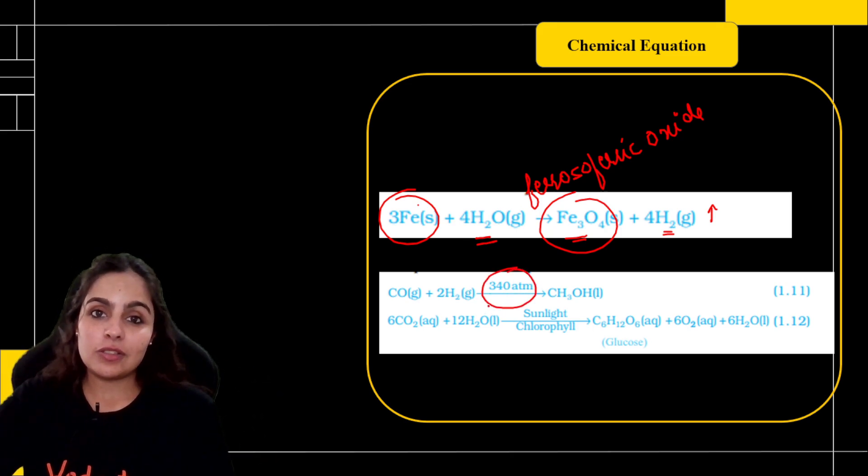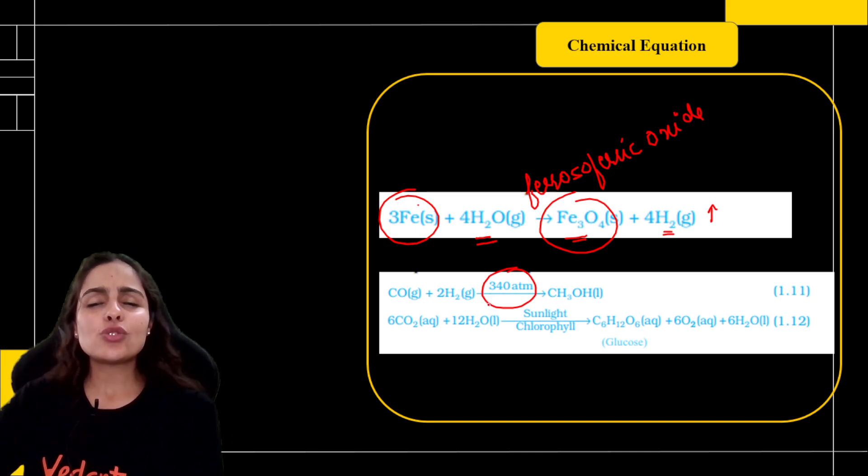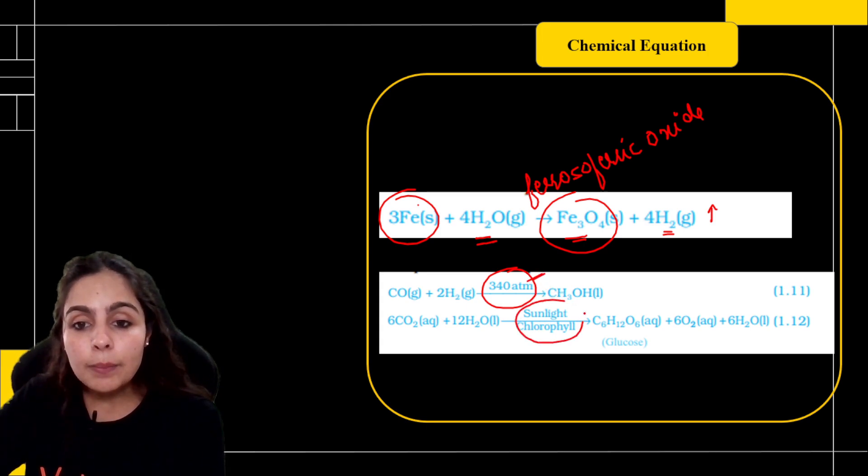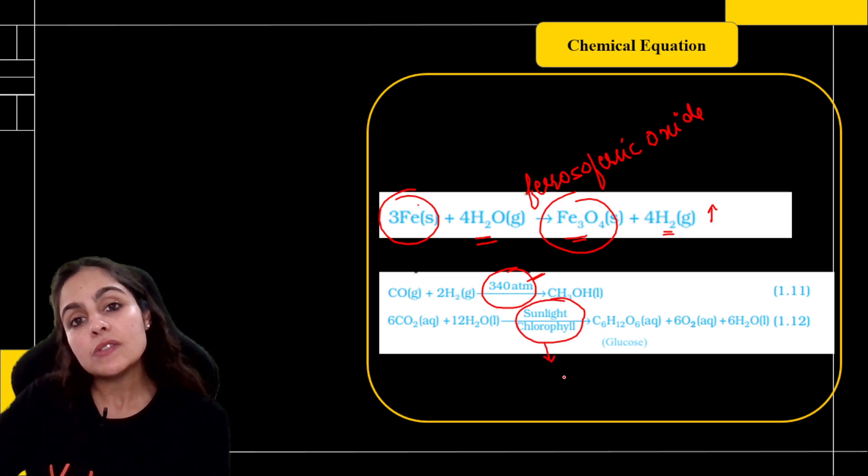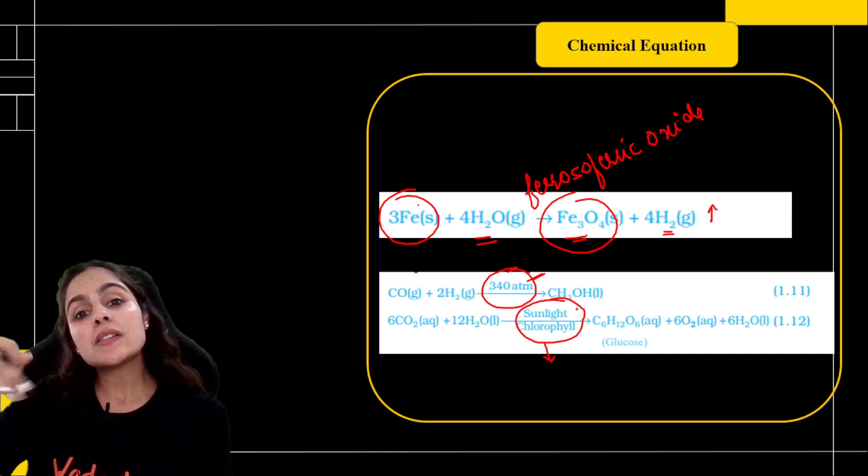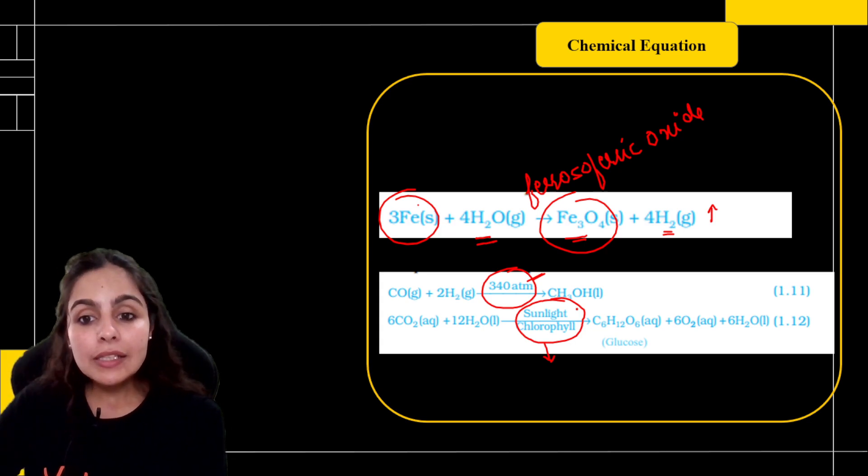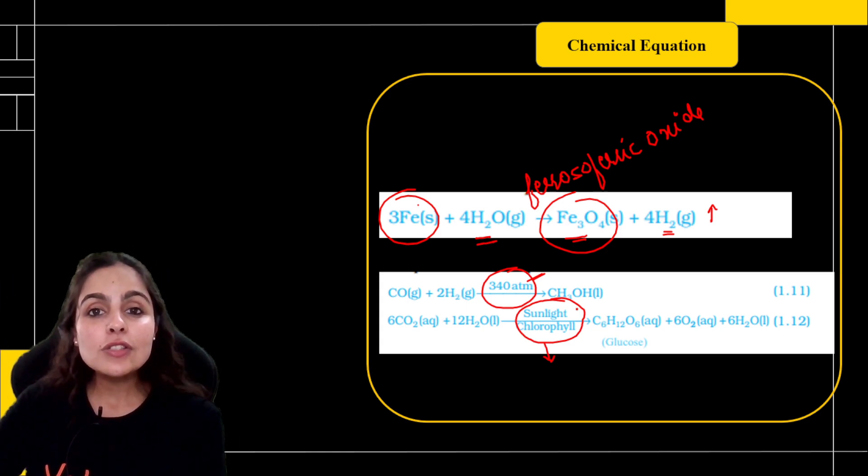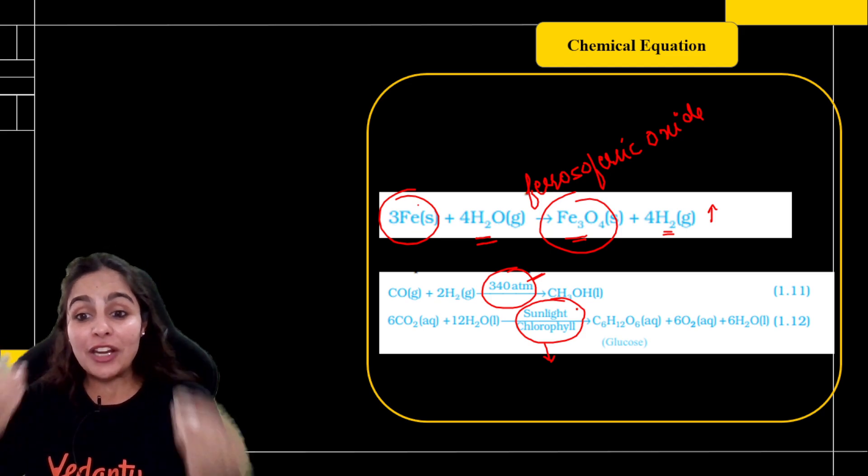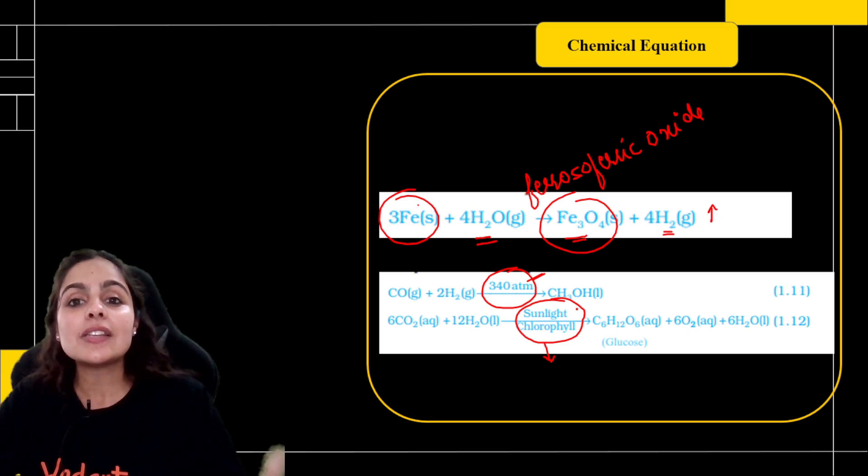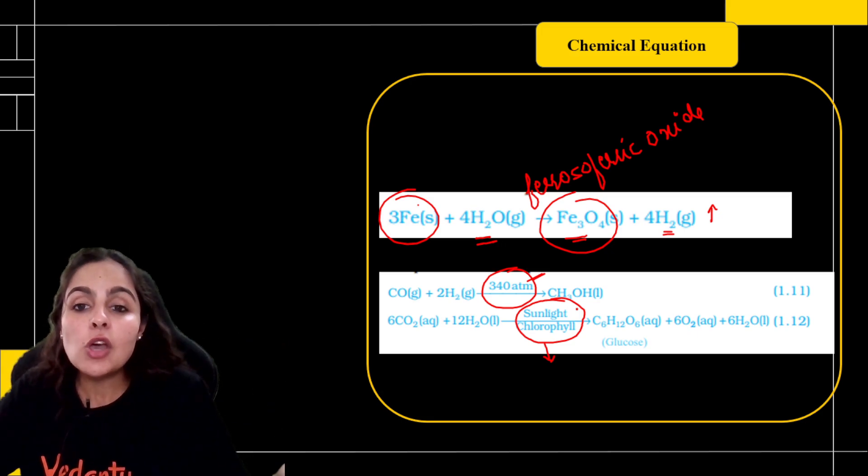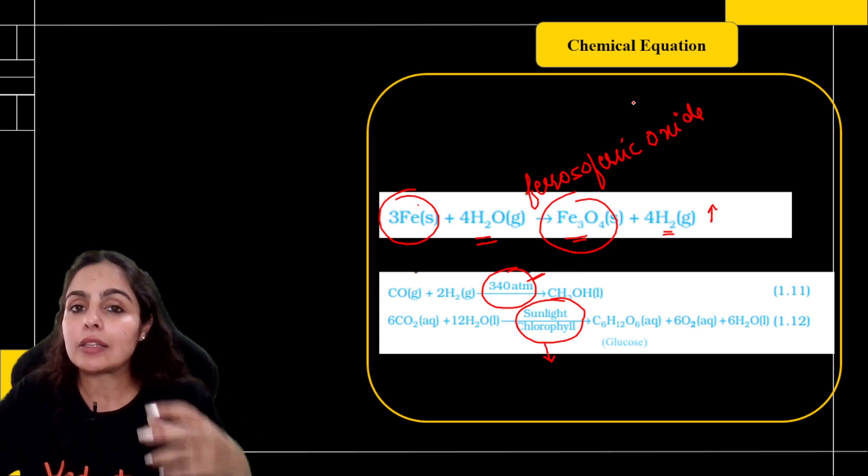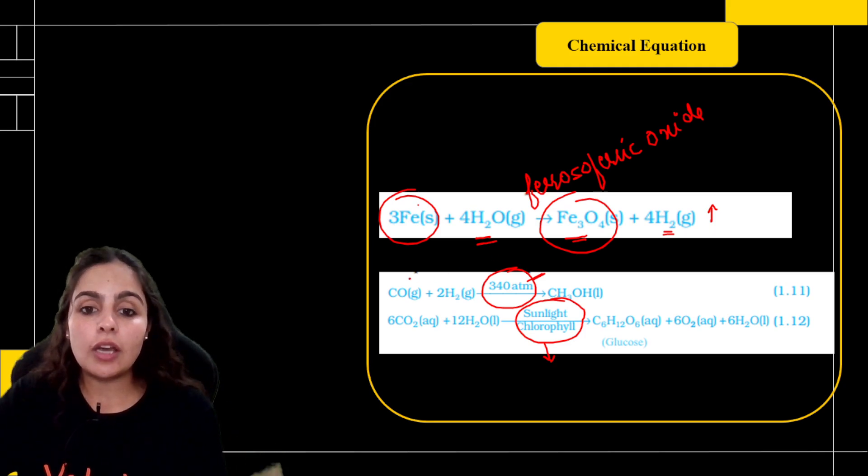Solid gas react with each other. Ferrous ferric oxide is a solid produced and hydrogen is a gas which is produced. If you can remember these physical states, please remember about these physical states so that you give a nice presentation to your answer, which makes an impact on the examiner's mind. They get so impressed. Moving on to next is condition. If anywhere any condition is required, you have to give it. It's mandatory. You don't have any choice here. Like for example, photosynthesis. Photosynthesis happens in presence of sunlight and chlorophyll.